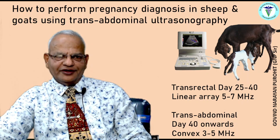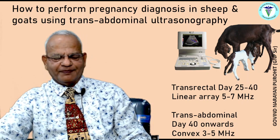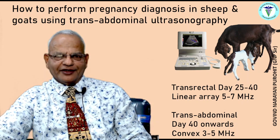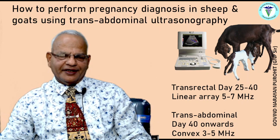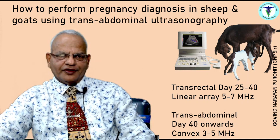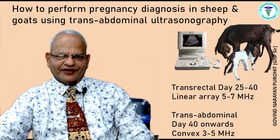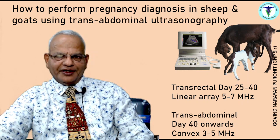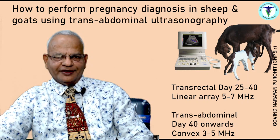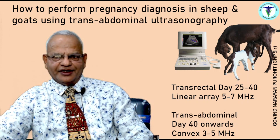In today's talk we discuss how to perform pregnancy diagnosis in sheep and goats using transabdominal ultrasonography. Pregnancy diagnosis in sheep and goat is difficult by abdominal palpation before three and a half to four months, and transrectal palpation is not possible for sheep and goat. Transabdominal ultrasonography is the easiest and least invasive method for pregnancy diagnosis.